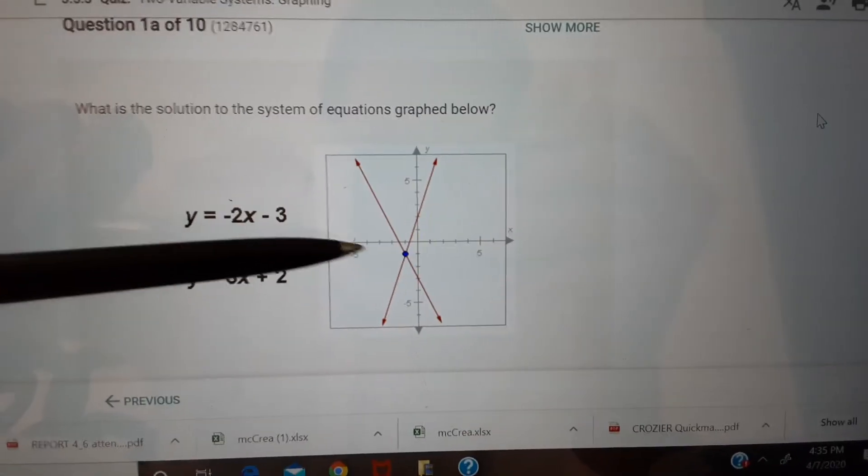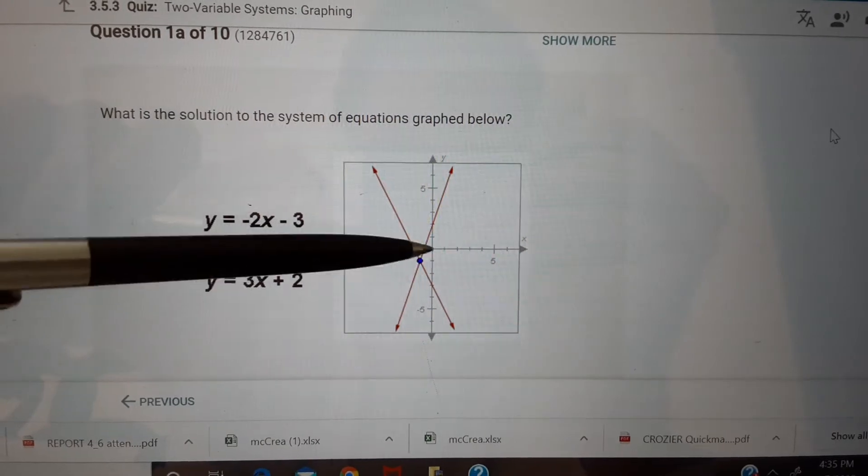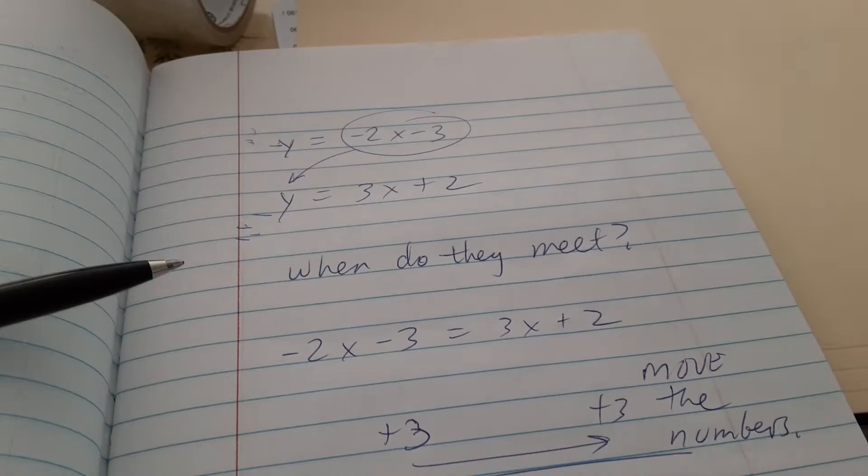Here, you can almost look at it and say it's going to be negative 1 for y and negative 1 for x. That's what it looks like.